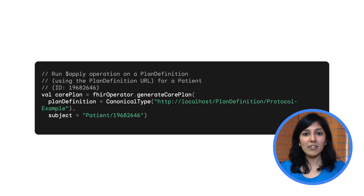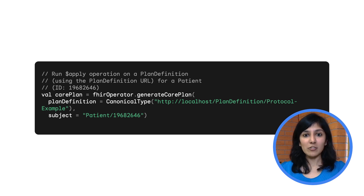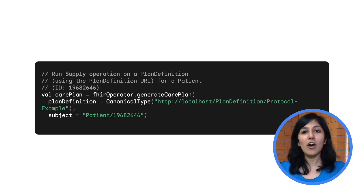To apply a plan definition on a single patient, you may use the Generate Care Plan API as shown in the example. The plan definition URL and the patient ID are required for this operation. It is also important to ensure that: one, the patient resource and all other relevant resources to be evaluated through CQL logic are persisted in the FHIR Engine's database; and two, all knowledge artifacts such as plan definitions, activity definitions, and libraries are installed to the Knowledge Manager. This API effectively implements the apply operation on a plan definition to a patient as defined in the FHIR specification.